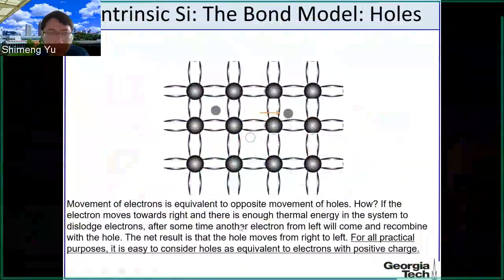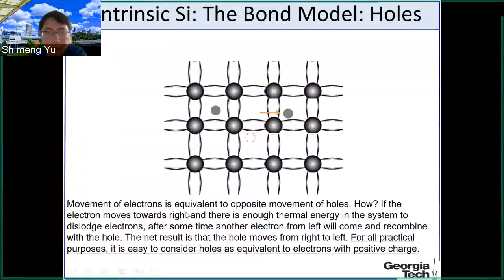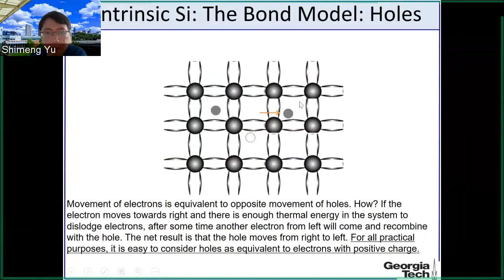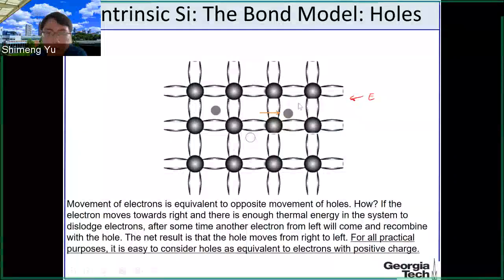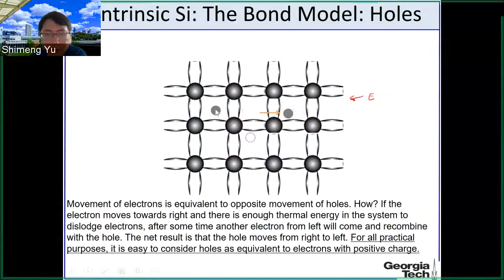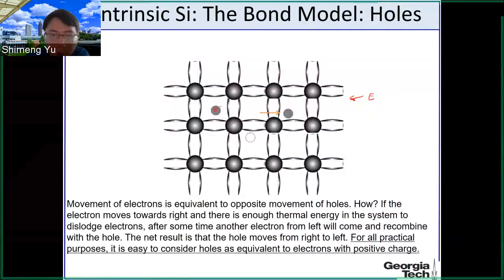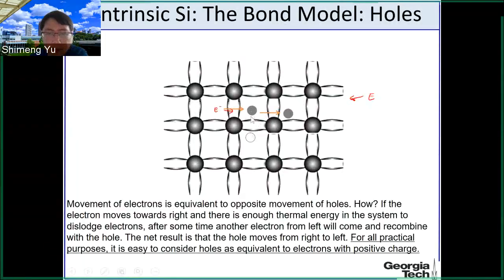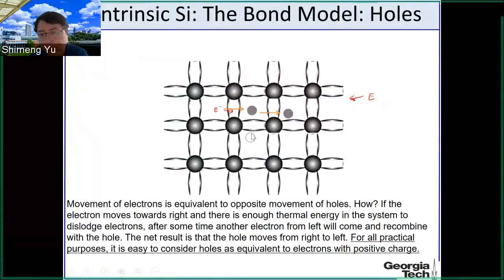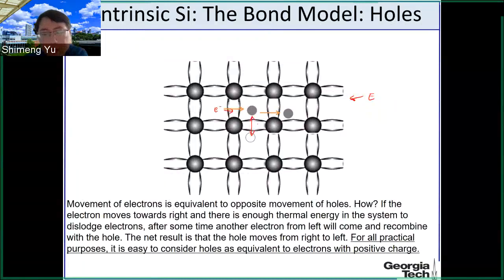The animation will show that electron flow and hole flow are equivalent. Right now this is a configuration of electrons and holes in the system. If you think about an electric field applied, the electrons tend to move to the right — this electron here moves to the right. Now those electrons and holes are at the same location, so they may have a probability to recombine — that means we re-form the bond here.